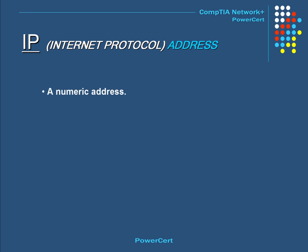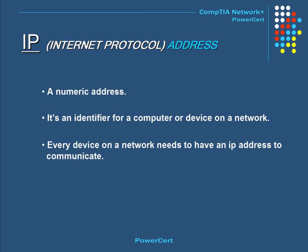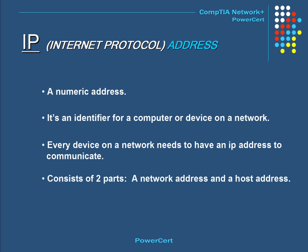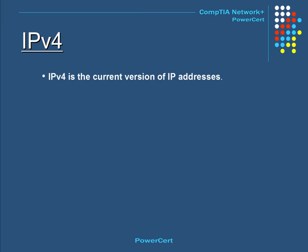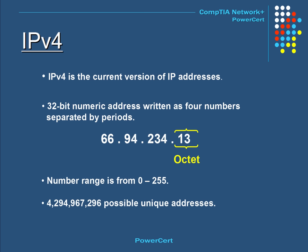An IP address is a numeric address and an identifier for a computer or device on a network. Every device must have an IP address for communication purposes. The IP address consists of two parts: the network address and the host address. There are two types of IP addresses: IPv4 and IPv6. IPv4 is the current version — a 32-bit numeric address written as four numbers separated by periods. Each group is called an octet, and the number range in each octet is 0 to 255. This address version can produce over 4 billion unique addresses.